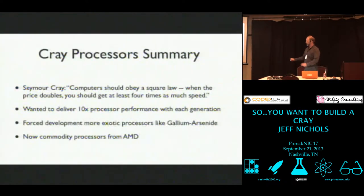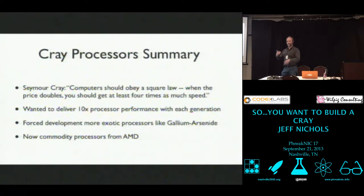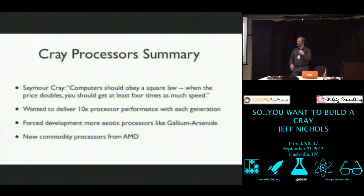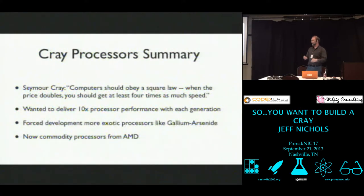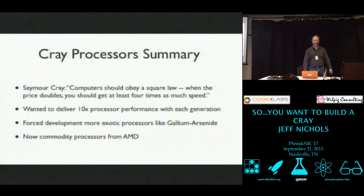Seymour Cray held that computers should obey a square law: when the price doubles, you should get at least four times as much speed. He really had this bias — he wasn't done until he could deliver with each generation 10 times more processor performance. That actually drove his companies into the ground. He went broke at least three times. It's a really interesting history — go look up the article on Wikipedia. His drive to deliver that performance forced the company into really exotic research. They were the first looking at gallium arsenide. Now the processors are AMD Opteron 16-core — they're big but they are a commodity.